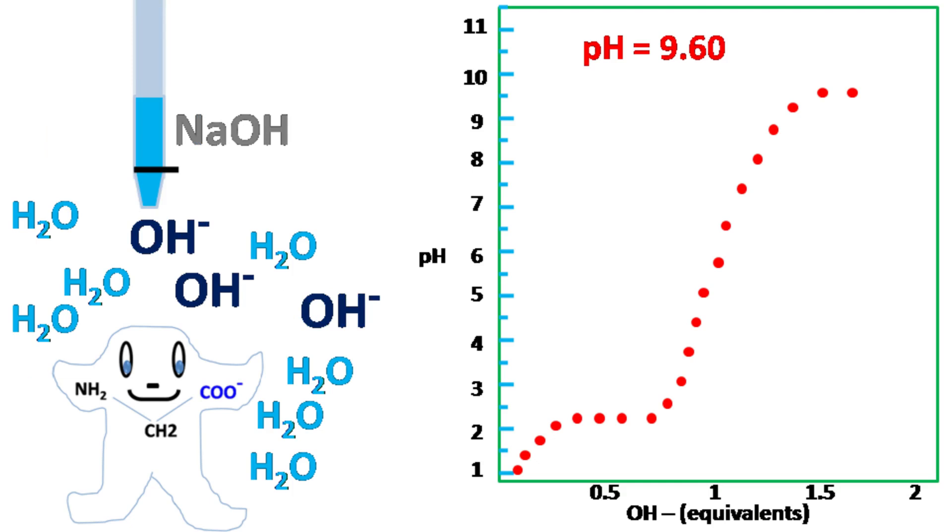As the H plus ions by the ammonium groups are donated, the glycine now has a net negative charge. And further addition of hydroxyl ions causes further increase in pH.